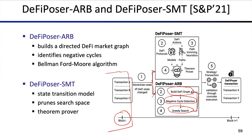The SMT solver, on the other hand, is a little more complex and involves several different steps, but reaches the same goal. First, we perform manual modeling of the DeFi protocol — for example, we take Uniswap and write a model that represents how it works. We do this with Curve and any other DeFi protocol we want to capture. Then we apply path trimming heuristics; for example, if we don't want to capture some paths in the DeFi graph, we can trim them to reduce the search space.